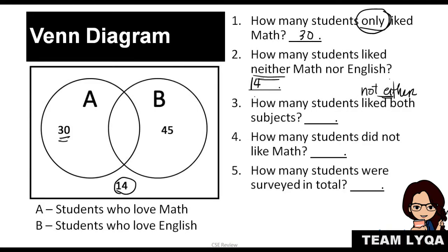The key to Venn diagrams is a little bit of arithmetic but more on comprehension — kailangan niyo malaman kung ano talaga ang hinahanap. You have to understand the question. Number 3: How many students like both subjects? When you say 'both,' it means the student belongs to both circles — that's the intersection. But we don't know exactly how many are in the middle unless we know the total number of students surveyed.